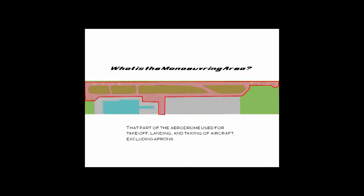That part of the airdrome used for takeoffs and landings is called the runway. The area intended for taxiing of aircraft is called the taxiways. Here we have both of them — taxiways and the runway, one runway in this case, highlighted in red. The runway is that part of the airdrome intended for landing and takeoff.